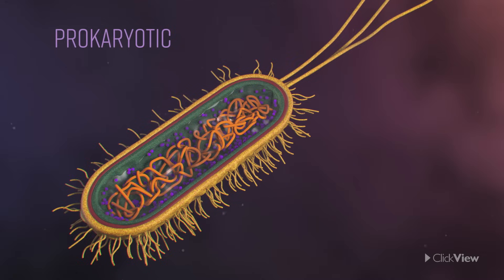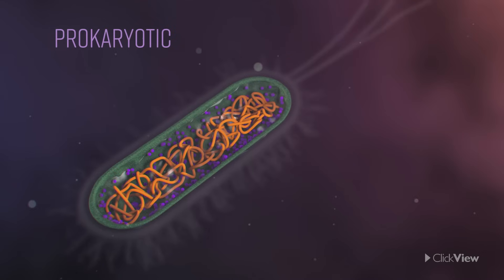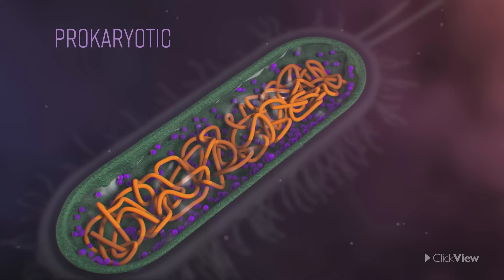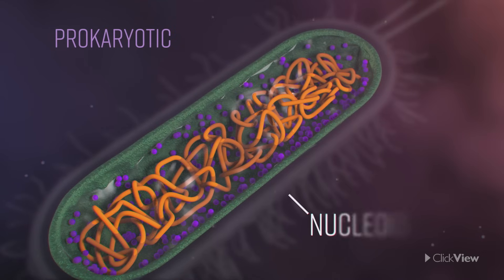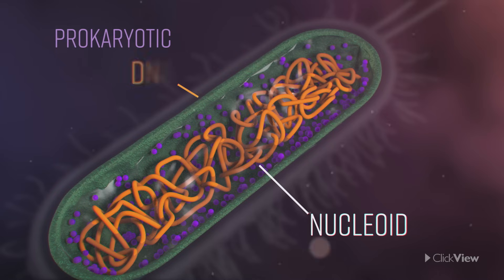Prokaryotic cells do not have a nucleus, only a nucleoid, which is the central, open part of the cell where the DNA is found.